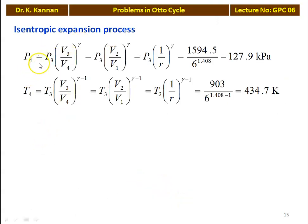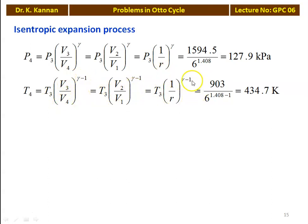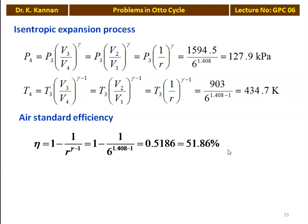For isentropic expansion process: P4 equals P3 × (V3/V4)^gamma where V3 equals V2 and V4 equals V1, so P4 equals P3 × (V2/V1)^gamma. T4 equals T3 × (1/R)^(gamma-1) equals 903 / 6^0.408 equals 434.7 Kelvin. Air standard efficiency eta equals 1 - 1/R^(gamma-1) equals 1 - 1/6^0.408 equals 0.5186, which is 51.86 percent.